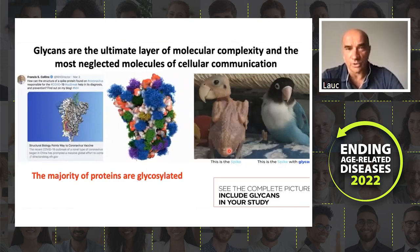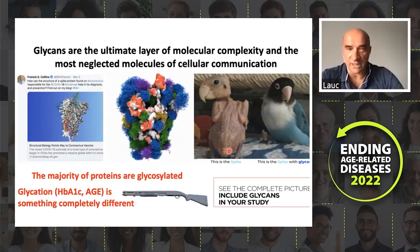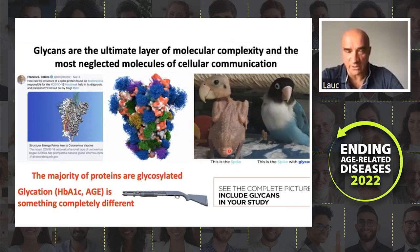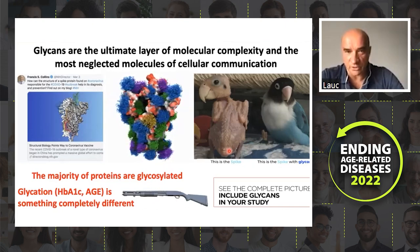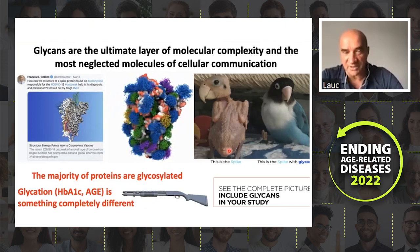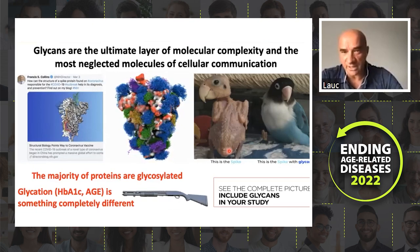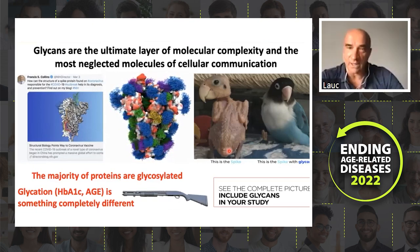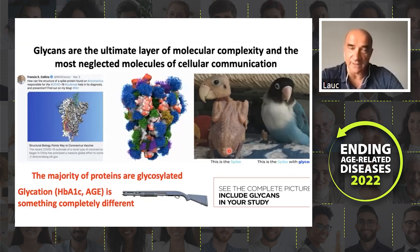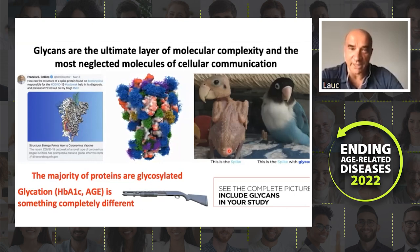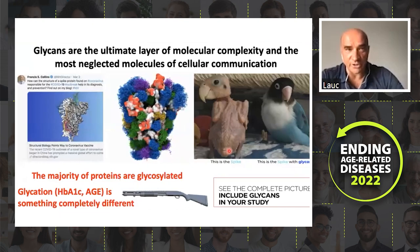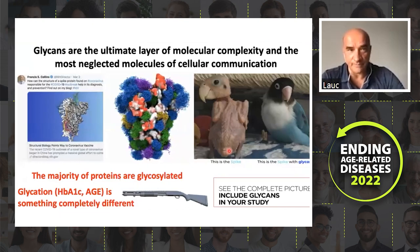A word of caution: glycosylation and glycation are something completely different. Glycation, which we usually measure as HbA1c or advanced glycation end-products, is a random chemical damage — like taking a shotgun and firing at a protein. While glycosylation is a sophisticated modification which occurs to the majority of proteins, and it enriches protein structure and function.